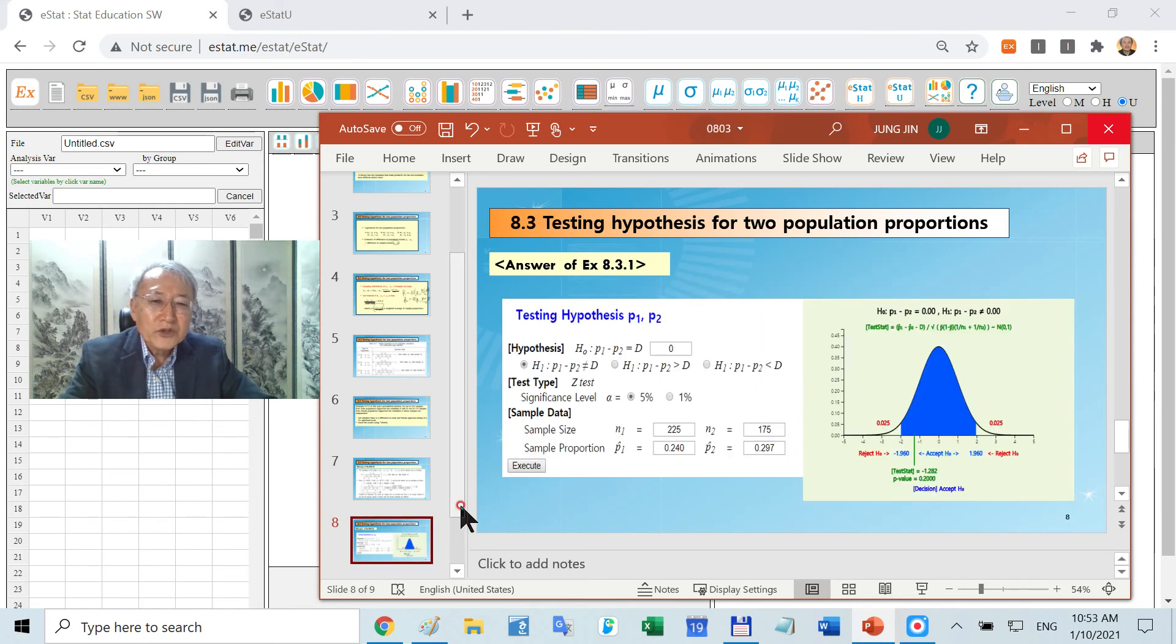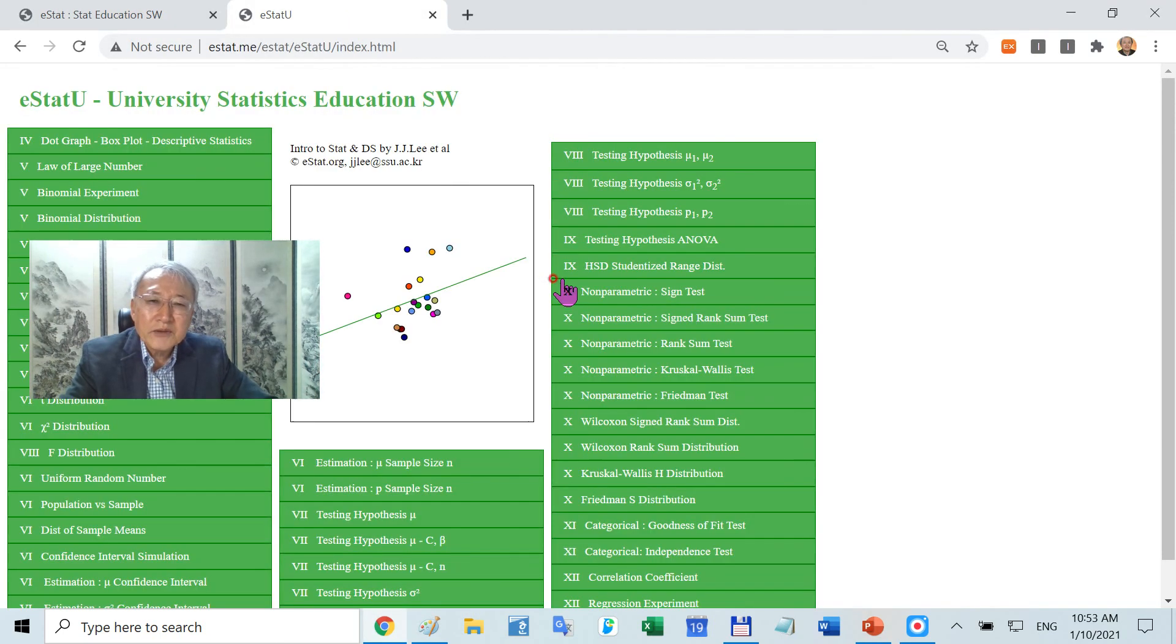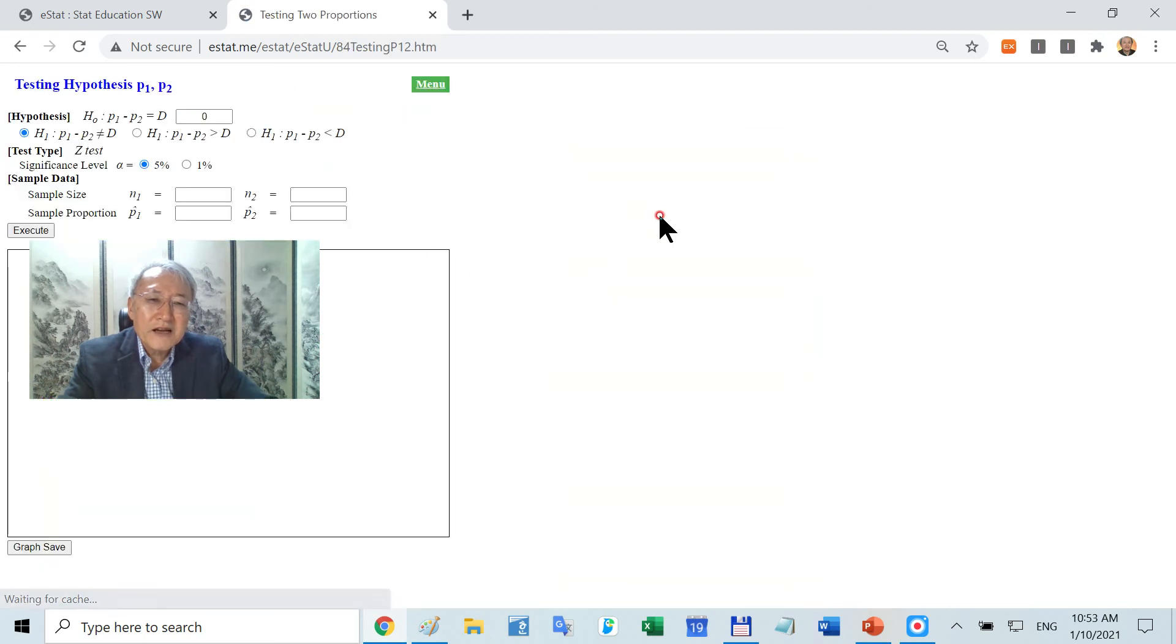If you are using East and U, go to this module. You plug in this number and you will get this one. Let's practice that. That's the testing hypothesis for two population proportions. This is the default alternative hypothesis. You collect how many samples: 225 and then you collect 175 from female population. The calculated sample proportion was 0.24 and then this is 0.297.